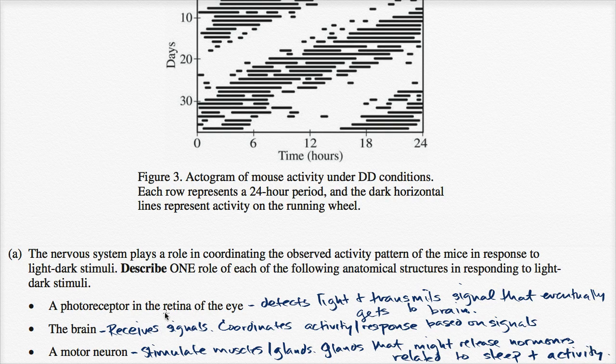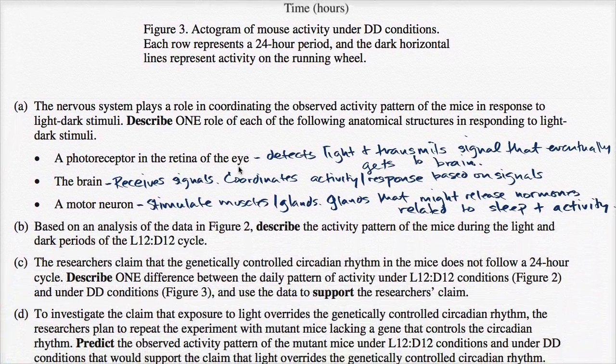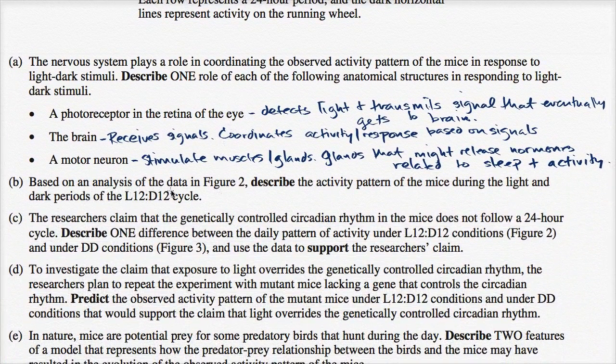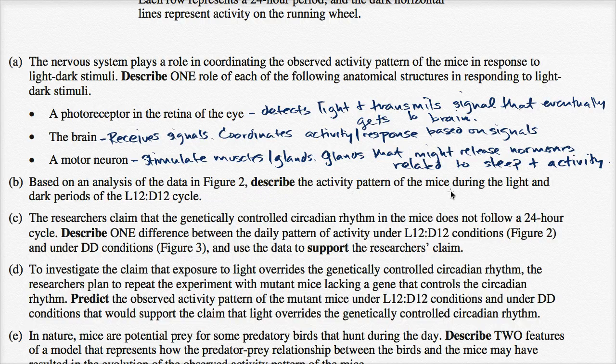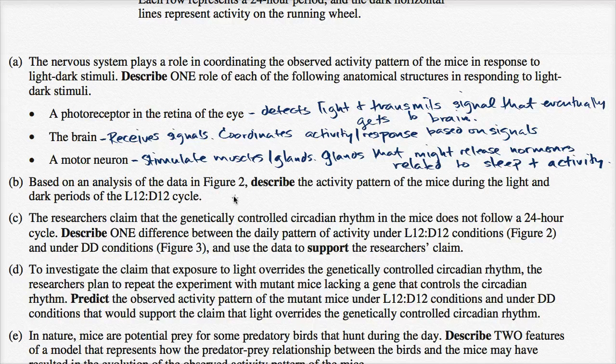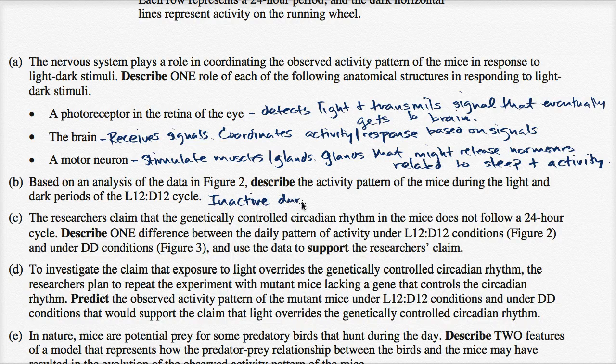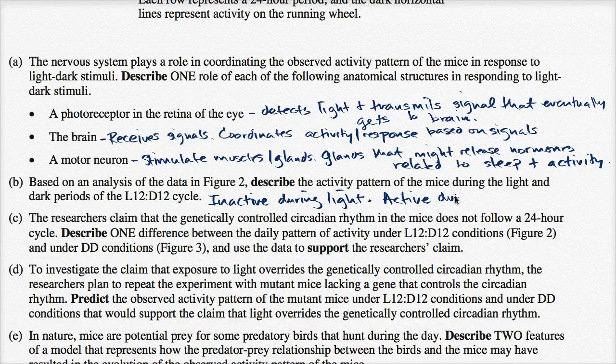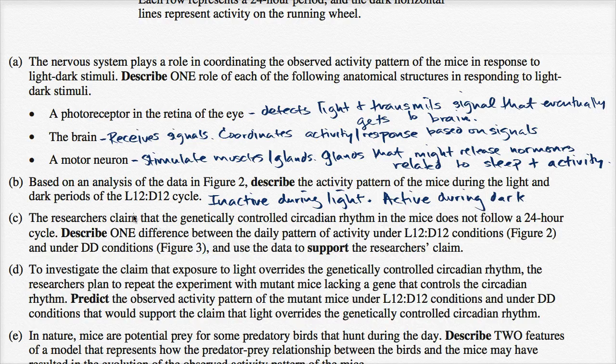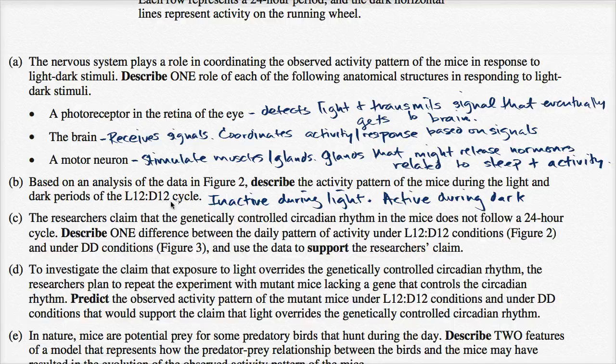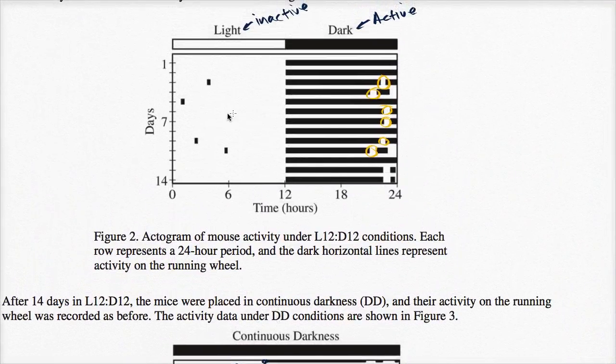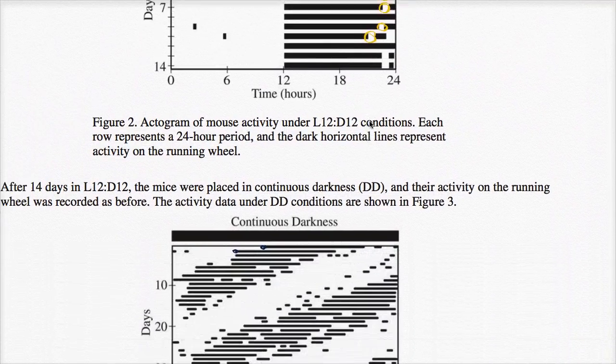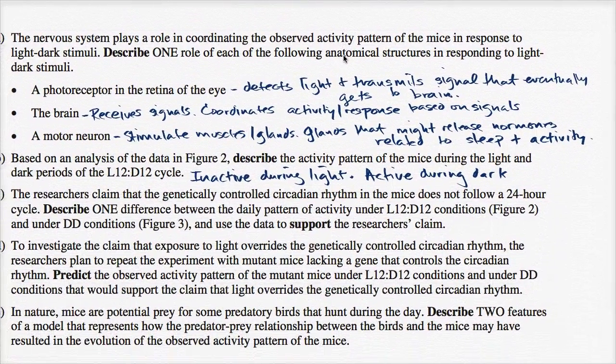All right, so I think we've taken a decent job of describing the role of each of those. Let's go to part B now. Based on an analysis of the data in Figure 2, describe the activity pattern of mice during the light and dark periods of the L12:D12 cycle. Well, this was pretty straightforward. When there was light, so they were inactive during light, active during dark. I could have written the answer down below, but I think I could have squeezed this one in. That's the basic idea. L12:D12 cycle we saw right over here, inactive during light, and then active during the dark.